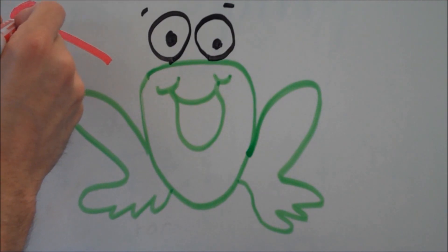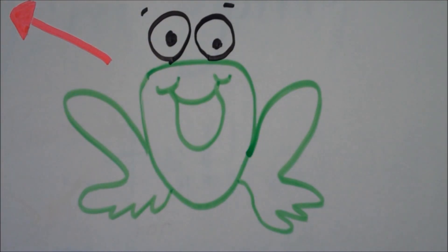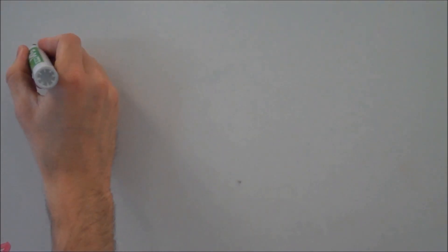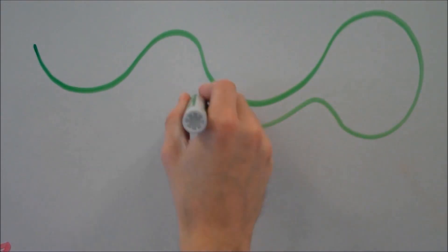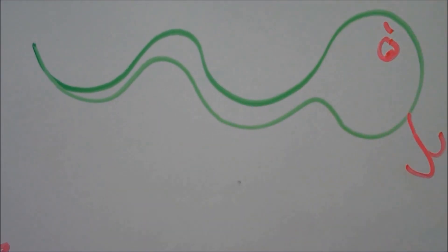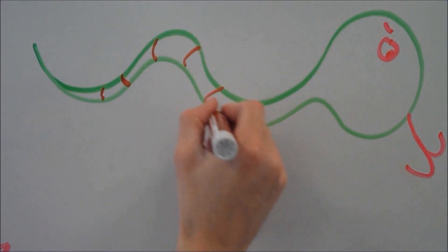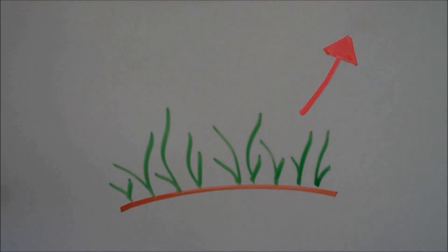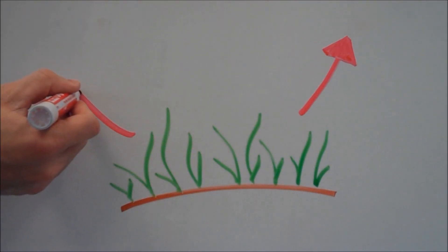But it doesn't stop there. A consumer that might get its energy from a frog would be a snake. Snakes have to eat too, and they get their energy by eating the frog, which has energy trapped inside of it from the fly, and the fly had energy from the plants. So food webs are all about showing the flow of energy.